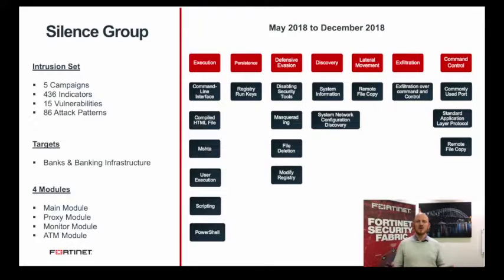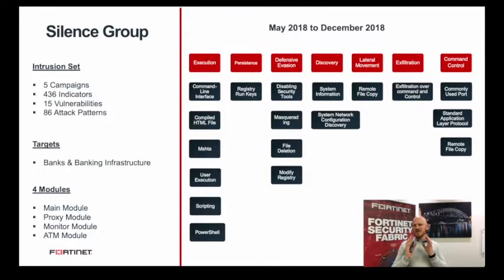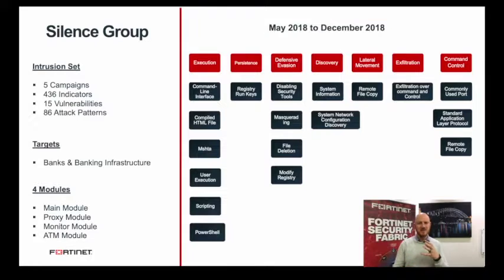The adversaries use execution techniques such as running scripts that call PowerShell. For persistence, they use registry run keys. Many adversaries want to spend as much time as possible on the machine, so they place malware in registry run keys. There are around 50 different early-start areas in Windows — approximately 50 places where code can be set to run automatically. For more details on this and its criticality, please refer to the playbook viewer.